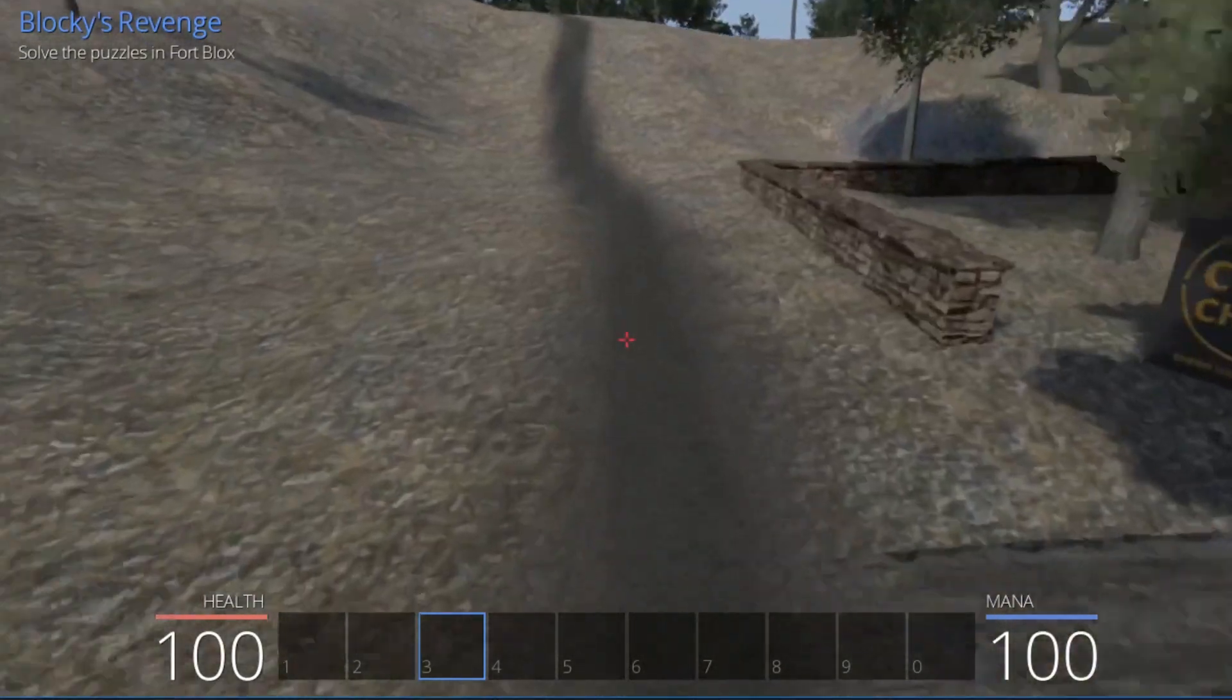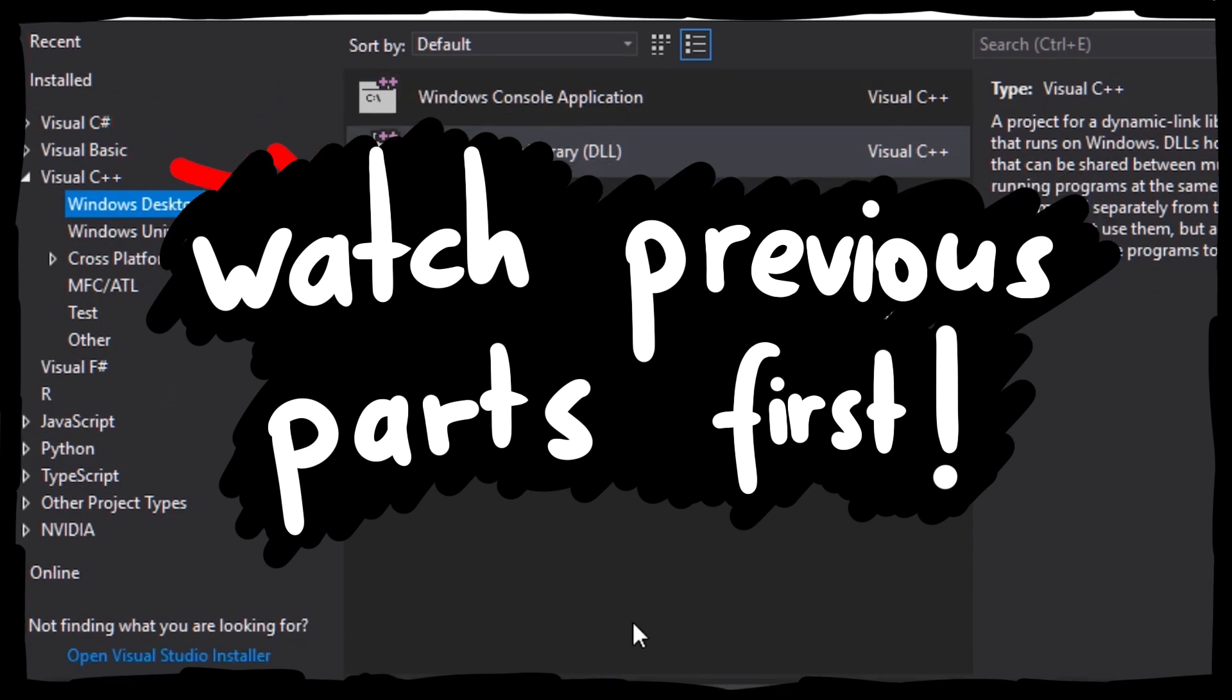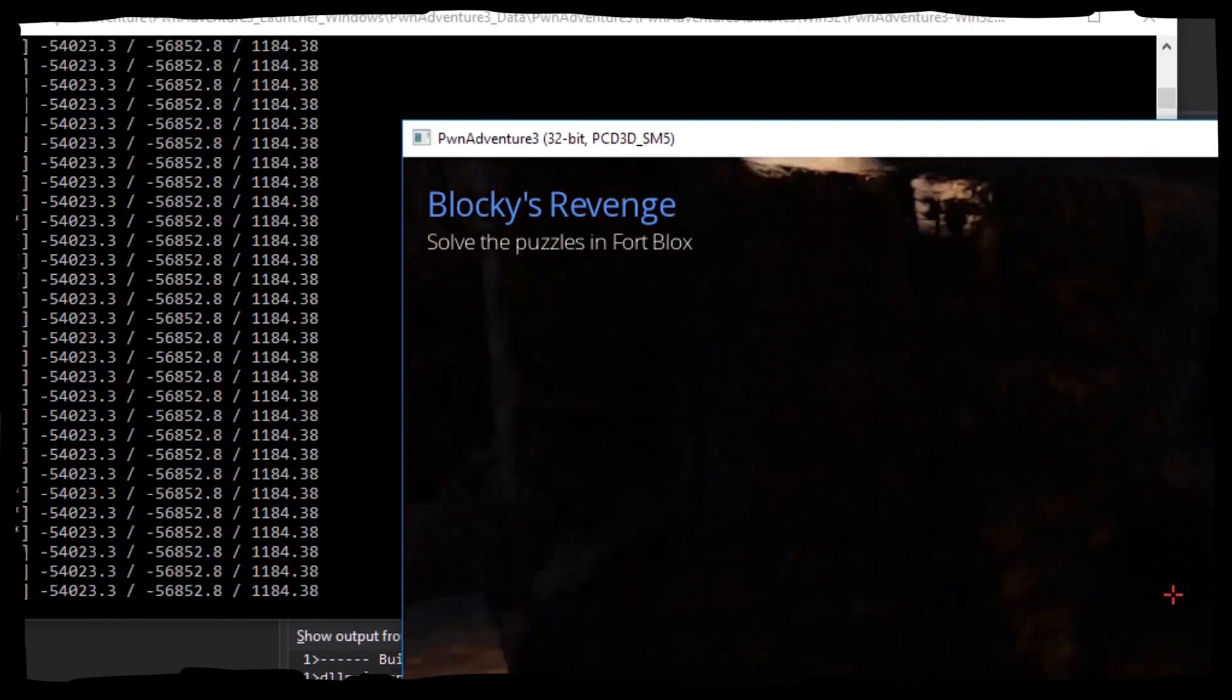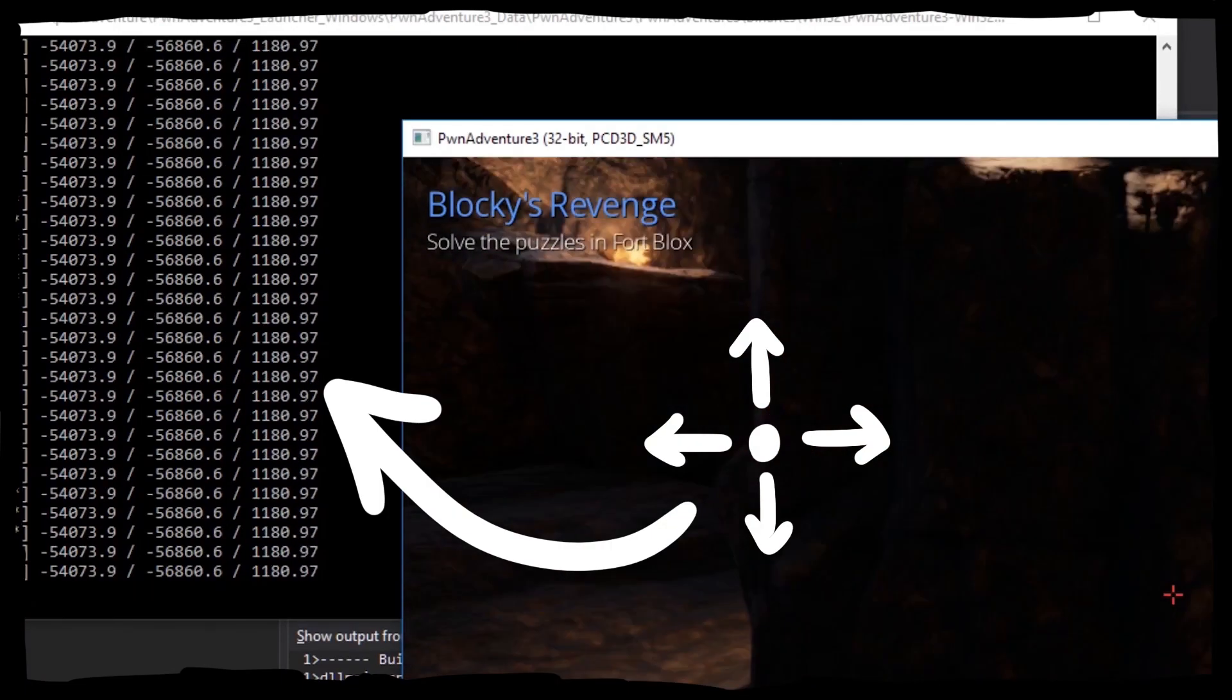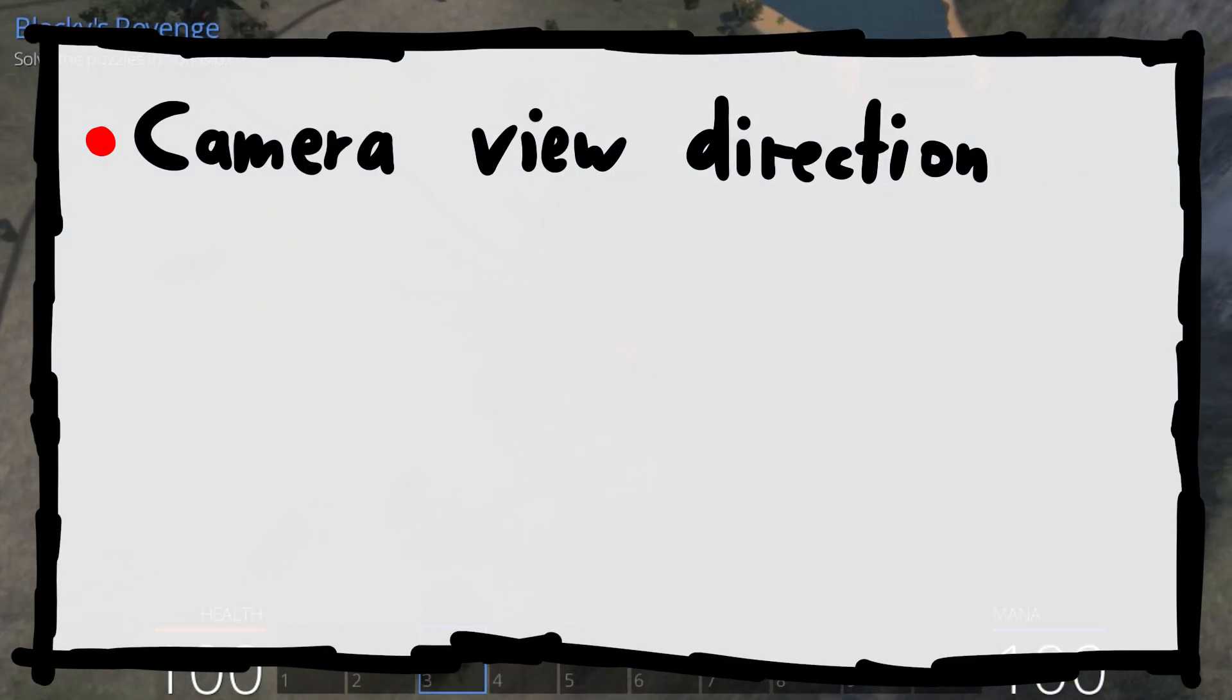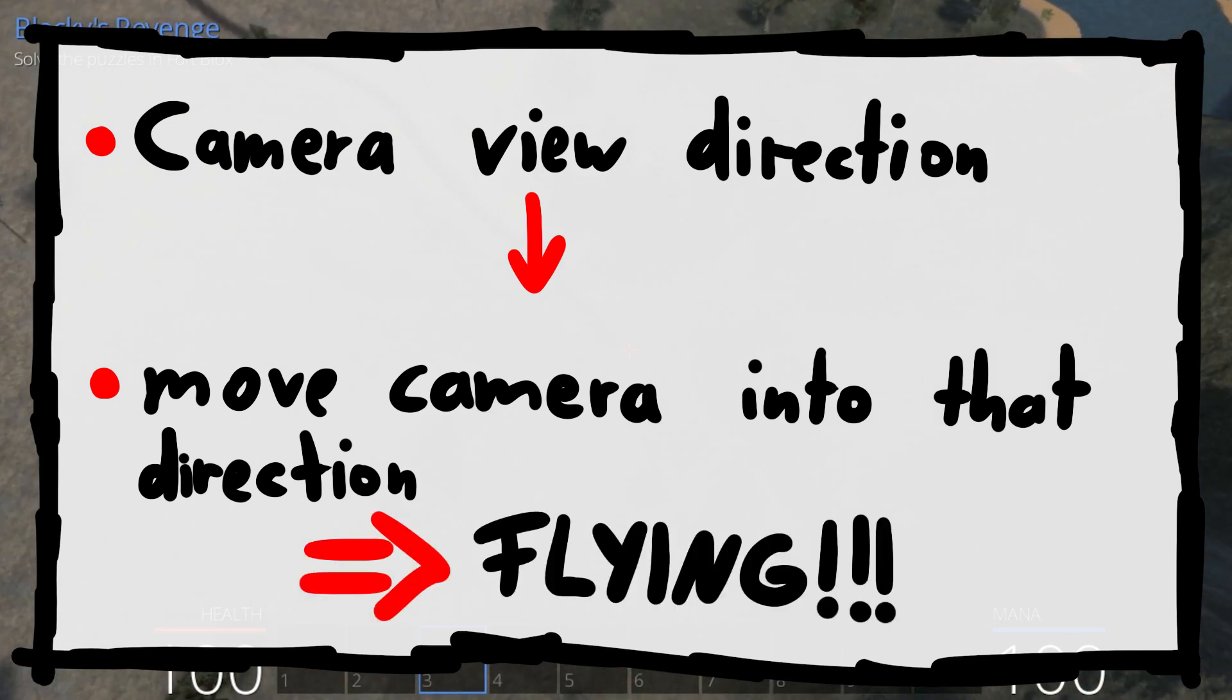Let's continue with our fly hack for PwnAdventure 3. So far we have created a project in Visual Studio to create a DLL, and the code is based on the code by guide attacking. We also already managed to read the player's position and print it. So we just have to use the camera view direction, then move the camera position into that direction and we can fly, right?